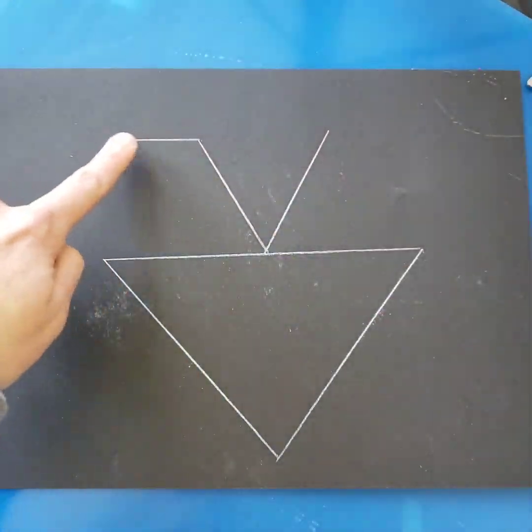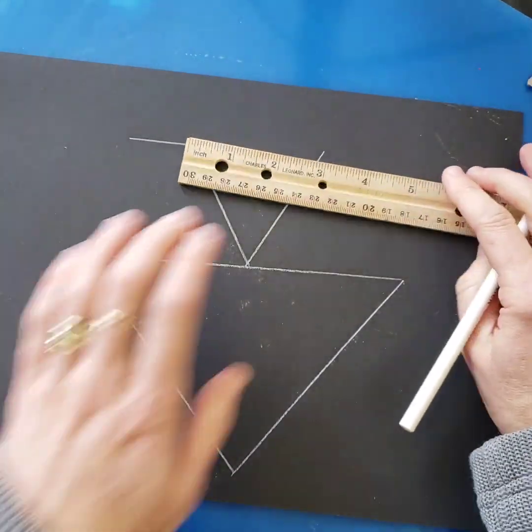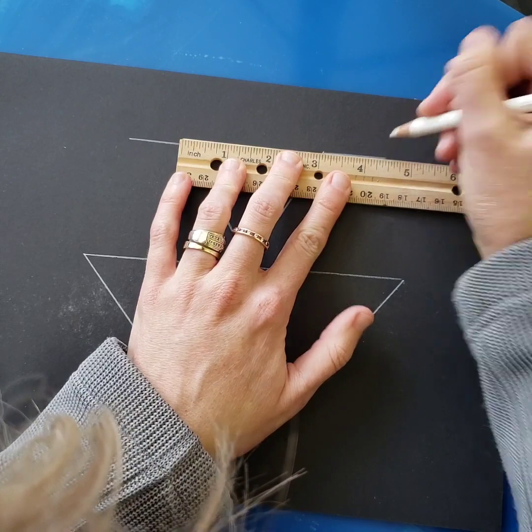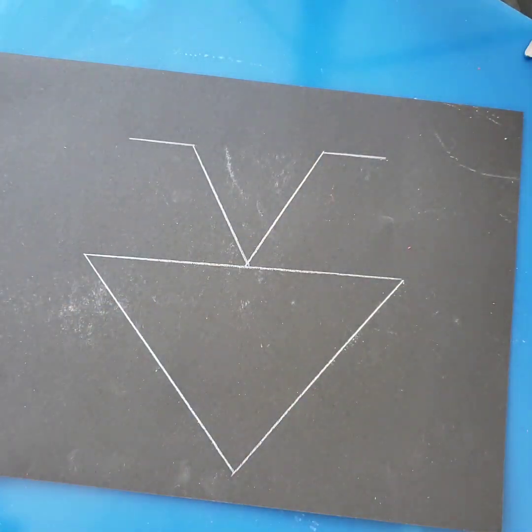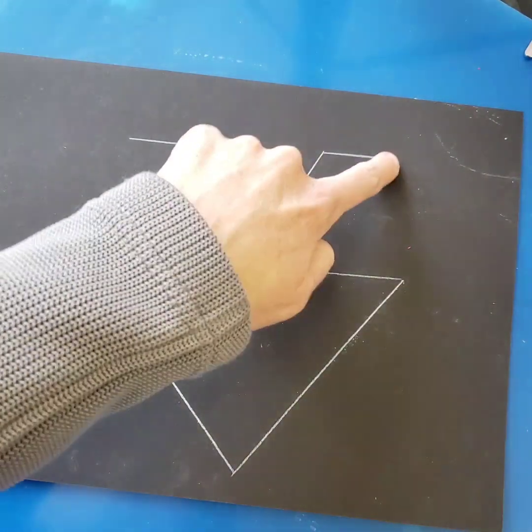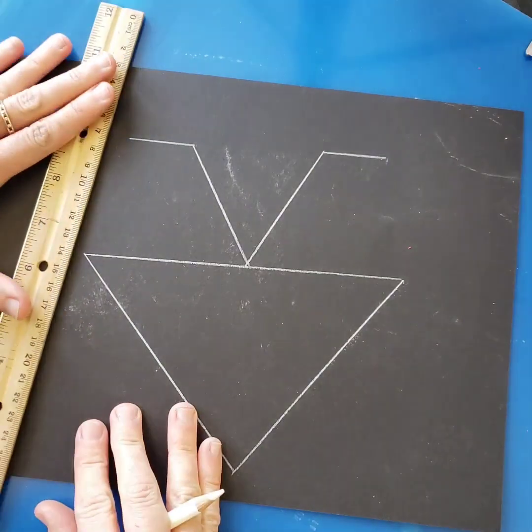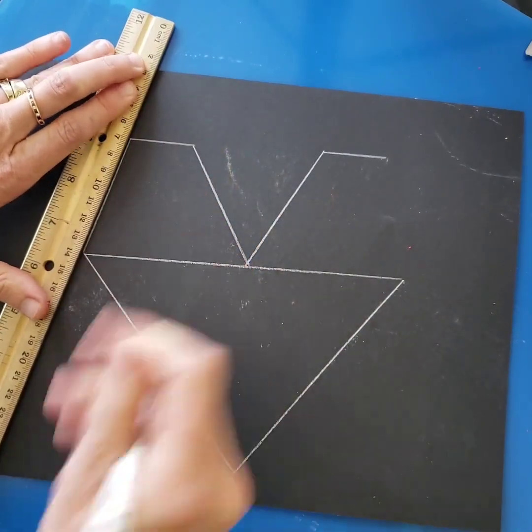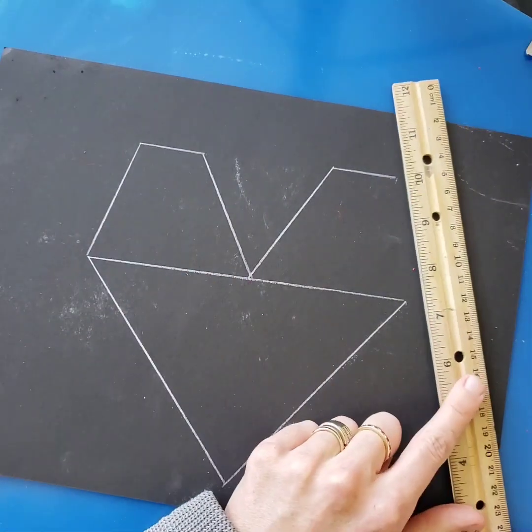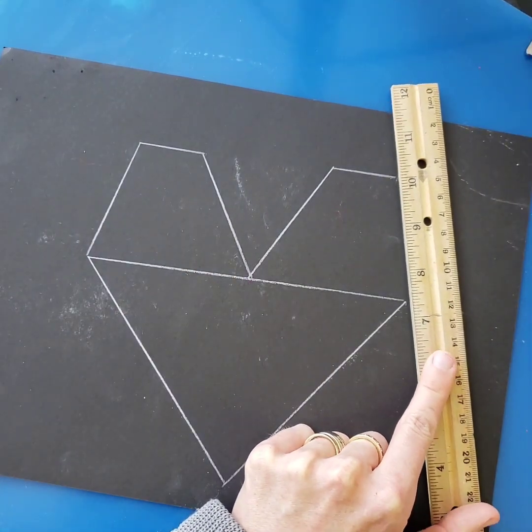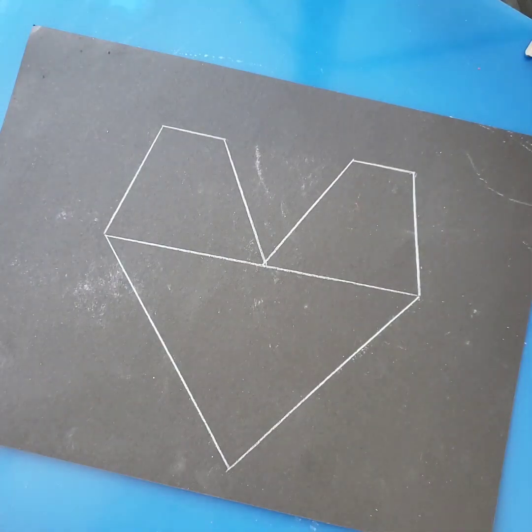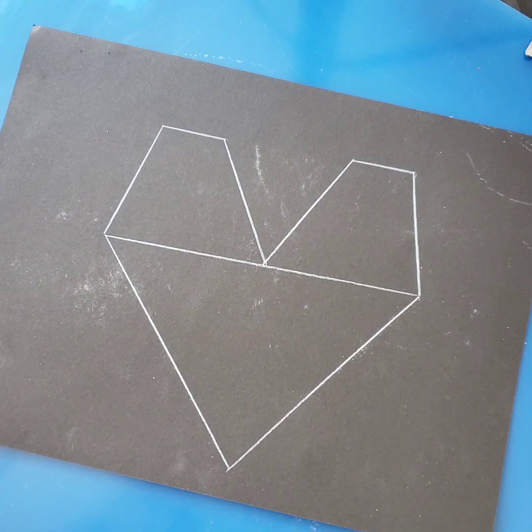Coming over to the left and the right of the top of that V, we're going to put some shorter lines that go horizontally. And then from the ends of those, we will be coming down to the left and right point of our original triangle. This is going to give us a geometric heart type shape.